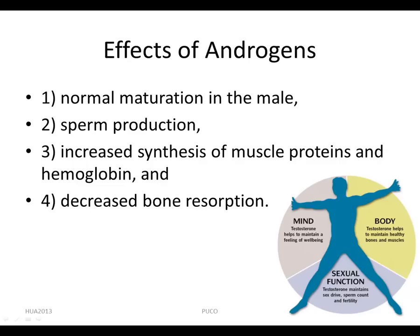Like estrogen and progestin, androgens bind to a specific nuclear receptor. Although testosterone itself is the active ligand in muscle and liver, in other tissues it must be metabolized to derivatives such as dihydrotestosterone (DHT).